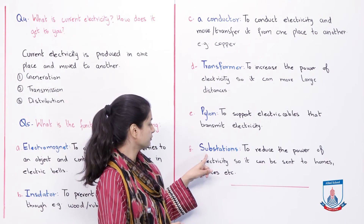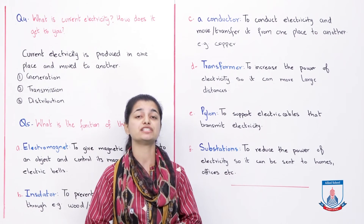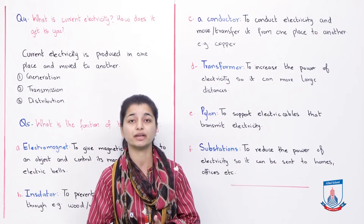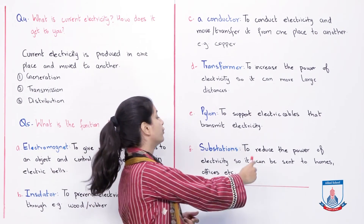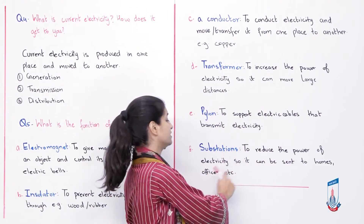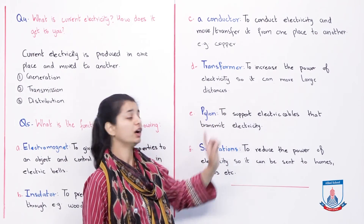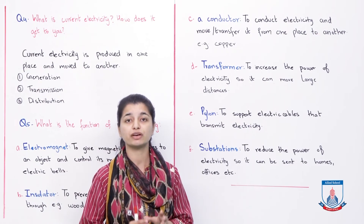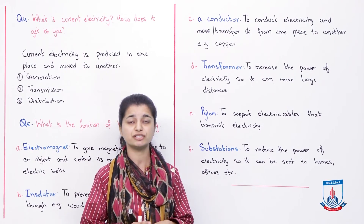The last part is substations. We have discussed this. Substations are places where the power of electricity is reduced so that it becomes suitable for houses and offices. To reduce the power of electricity so it can be sent to homes, offices, schools, etc. So the transformer increases power and the substation reduces power. You know all the functions of all these things and can use previous videos to understand and write them down.